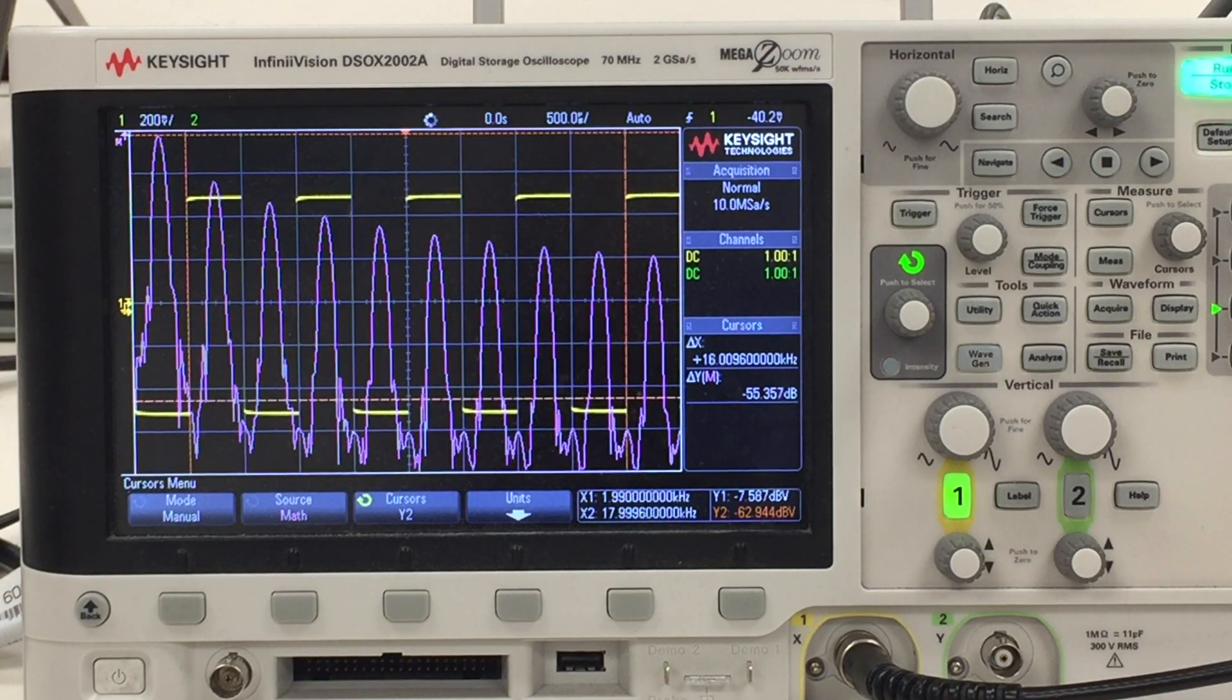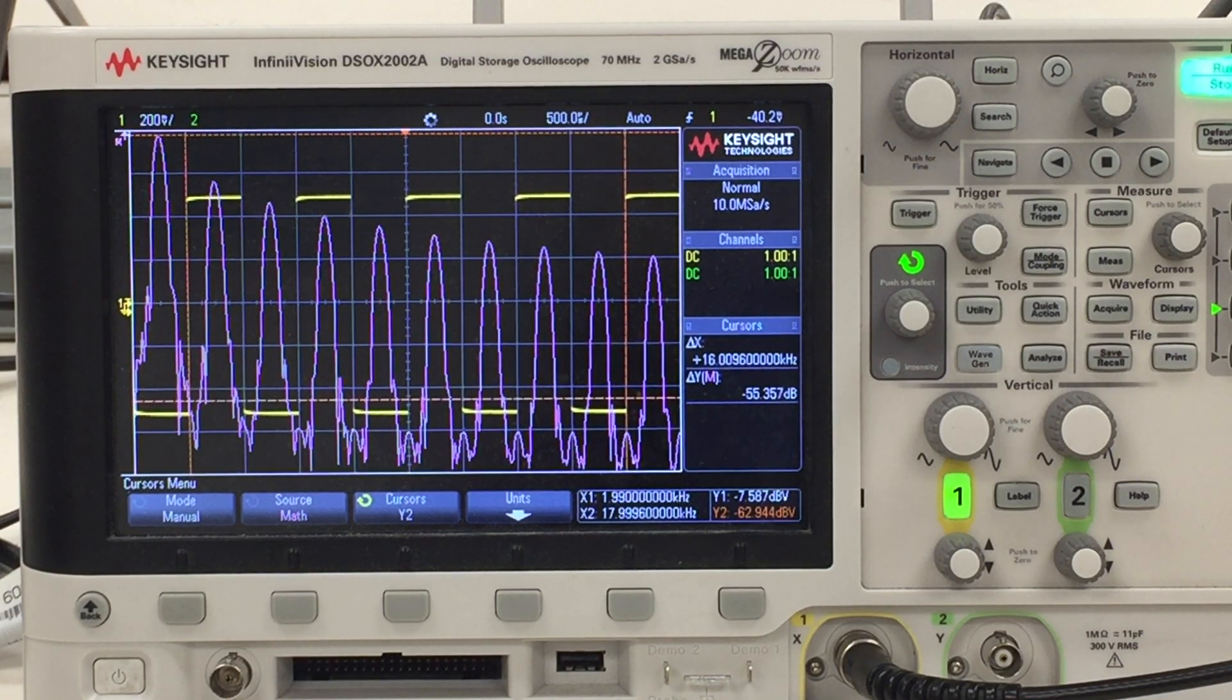That means whatever signal is at the second harmonic, it's one in 1,000th of the level, the value of the signal at the first harmonic.